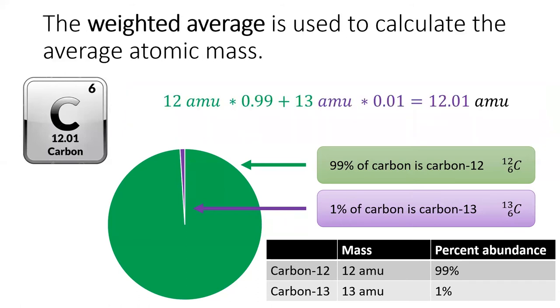Since 99% of carbon is carbon-12, the atomic mass is very close to 12 amu, but since 1% of carbon is carbon-13, the mass is just a little bit more than 12 atomic mass units.